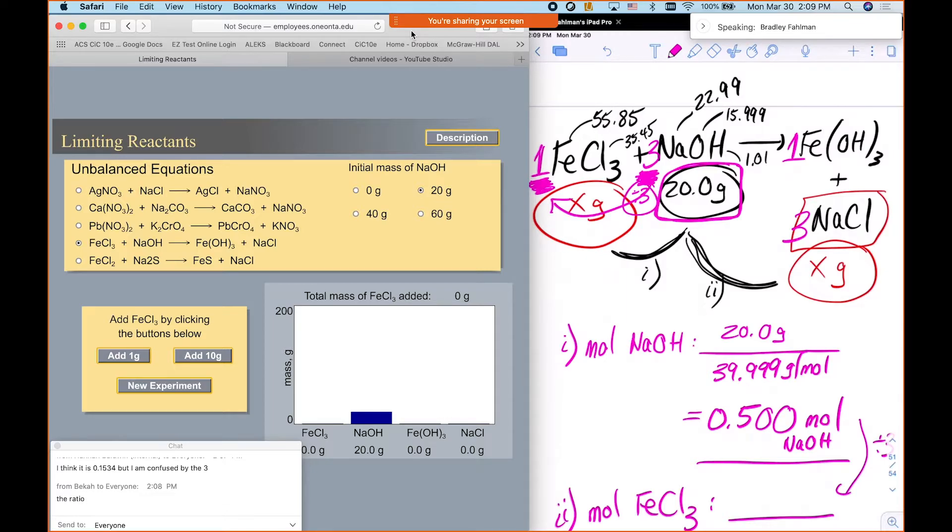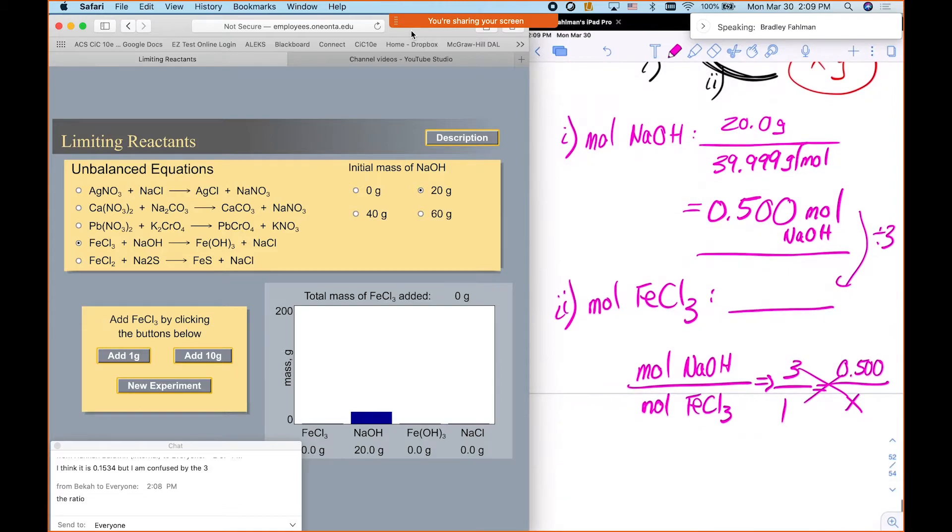Okay. So the reason, so we would have to multiply by three if we first did the iron chloride, and we wanted to go to sodium hydroxide, then it would be three times as much. Oh, okay. Okay. So in this case, it's really three times less, if you will, okay, moles of iron chloride. Okay. All right. So point... Yeah. You're welcome. So 0.5 divided by three is 0.167 moles.